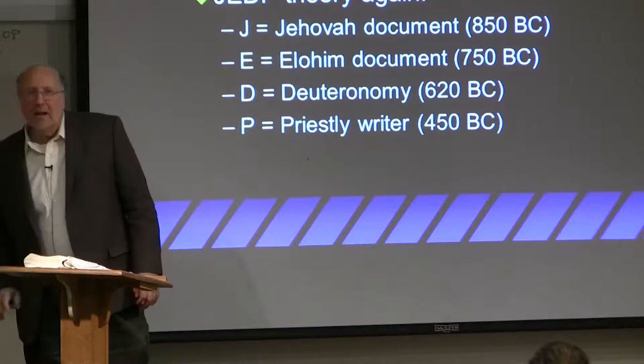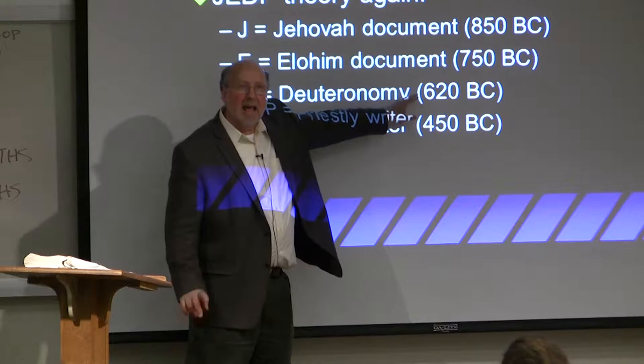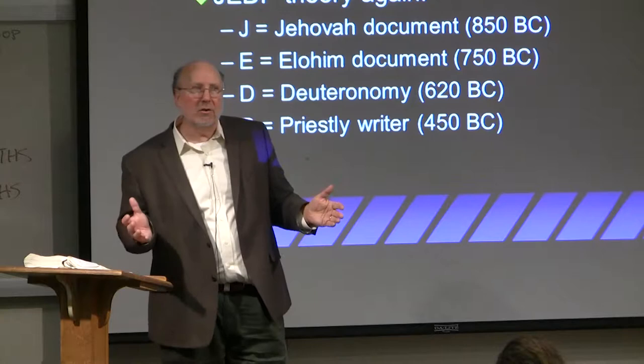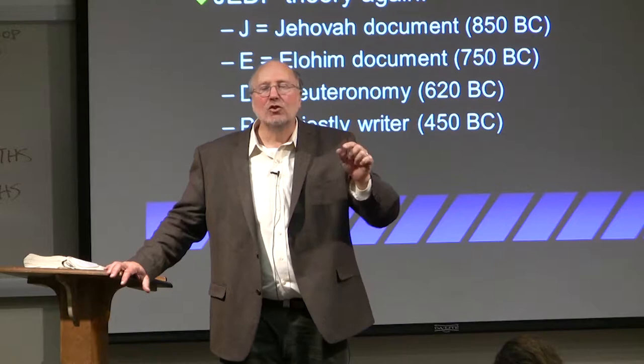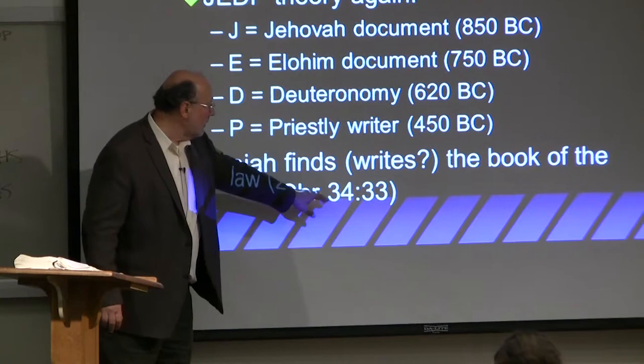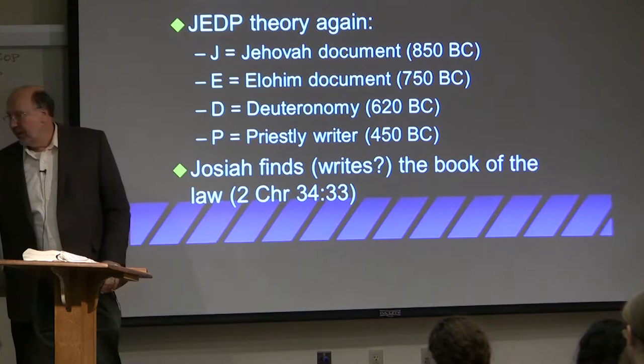Now, should we be able to tell the difference between a document written in 620 B.C. versus one from the time of Moses, around 1200 to 1400 B.C.? That's about 600 to 800 years between them. Do document types — the format you use — change over 800 years? They say Josiah finds the book of the law, as Chronicles 34 says. But the critics say no — Josiah wrote it.